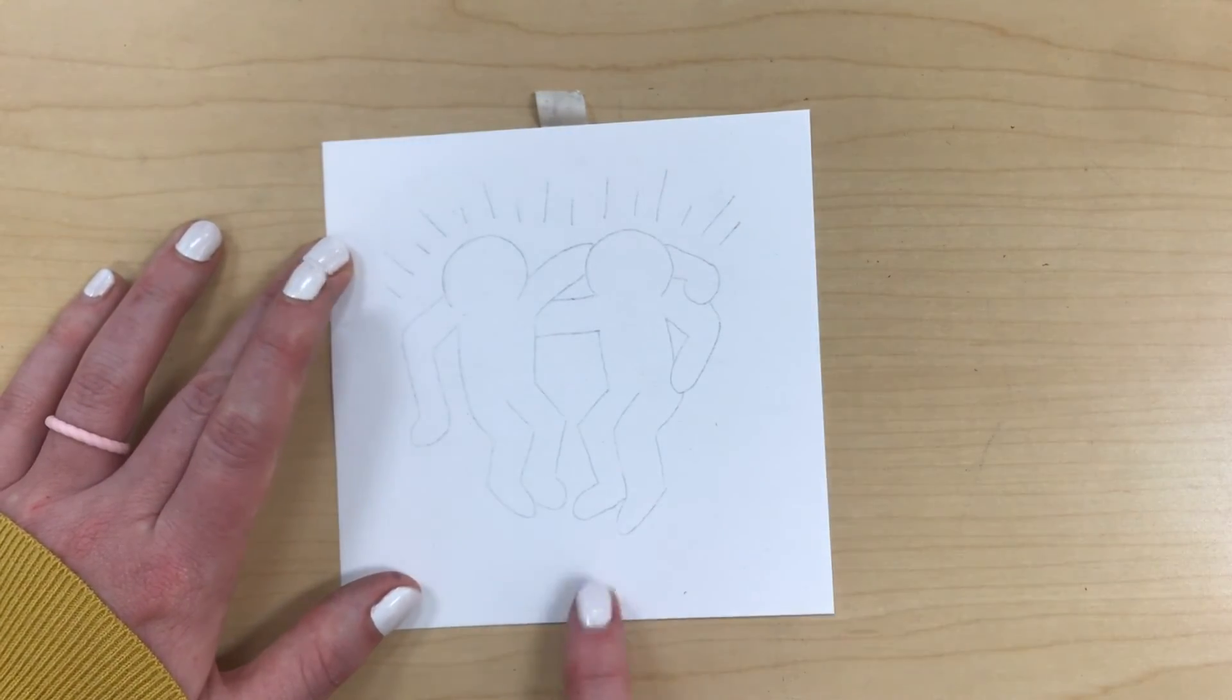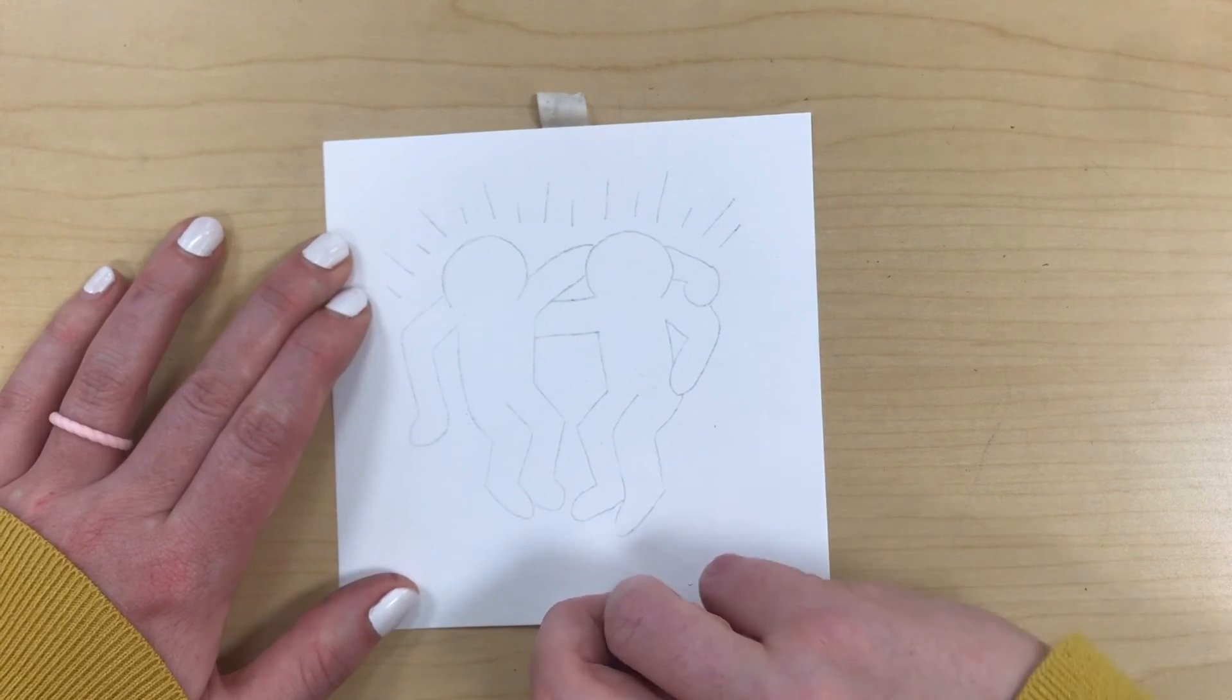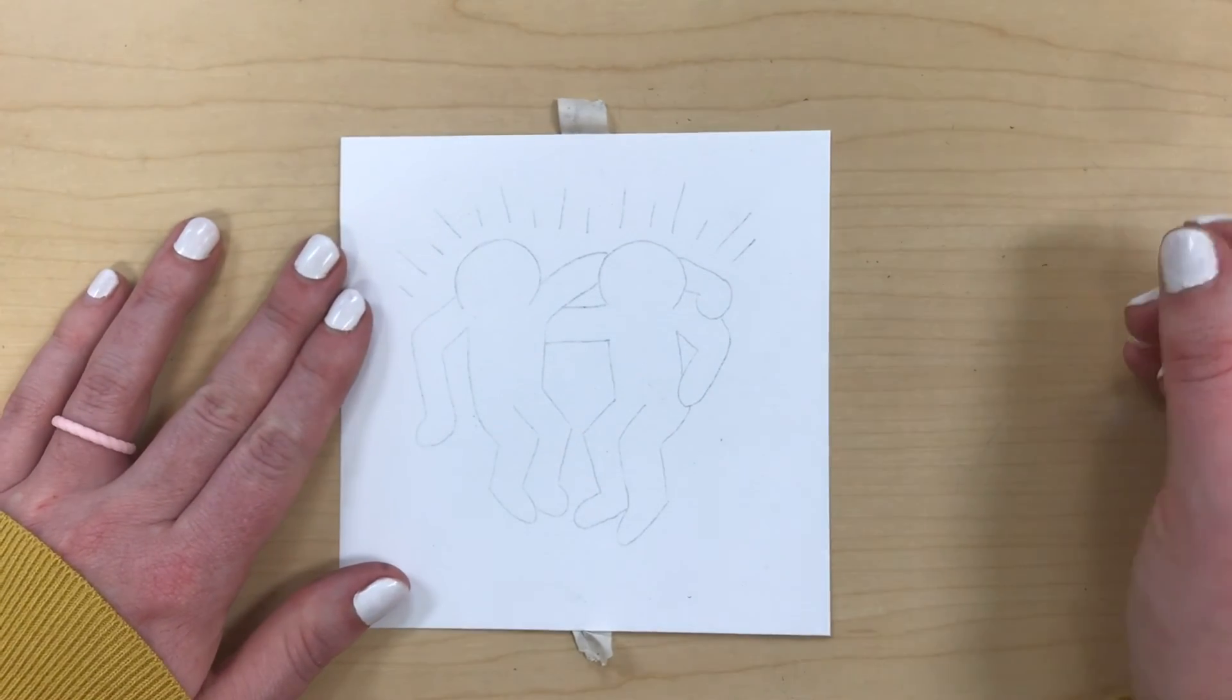At this point you can come in with a sharpie and outline all of your pencil lines and then we'll go from there.